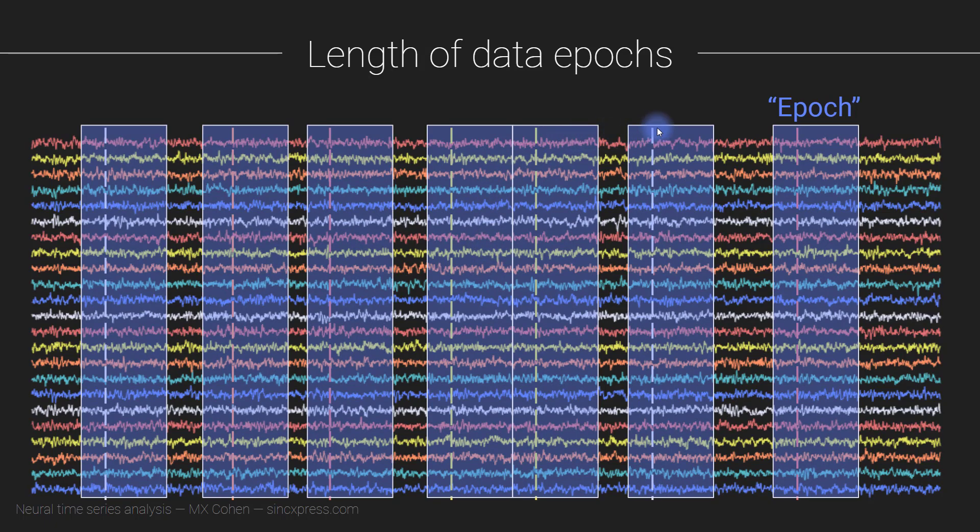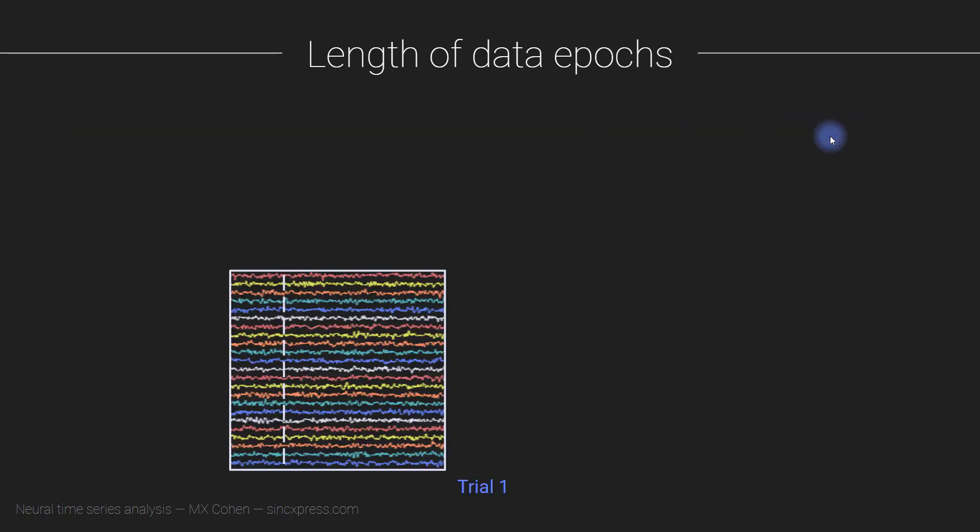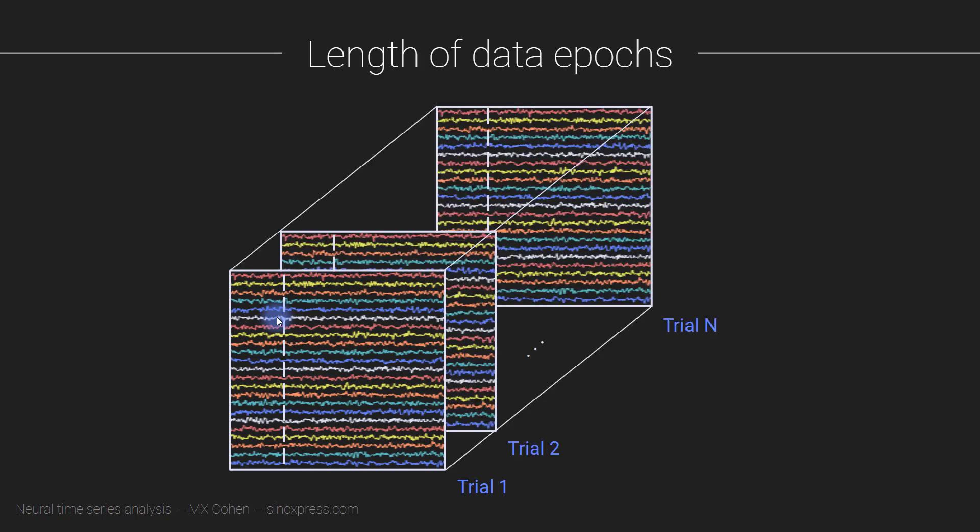And then you cut epochs around each of these events and these form your trials. So this would be the data frame from trial one. You can see it's time by trials, and then it's time locked to, you know, maybe this was when a picture appeared on the computer screen. So trial one, trial two, up to trial N.